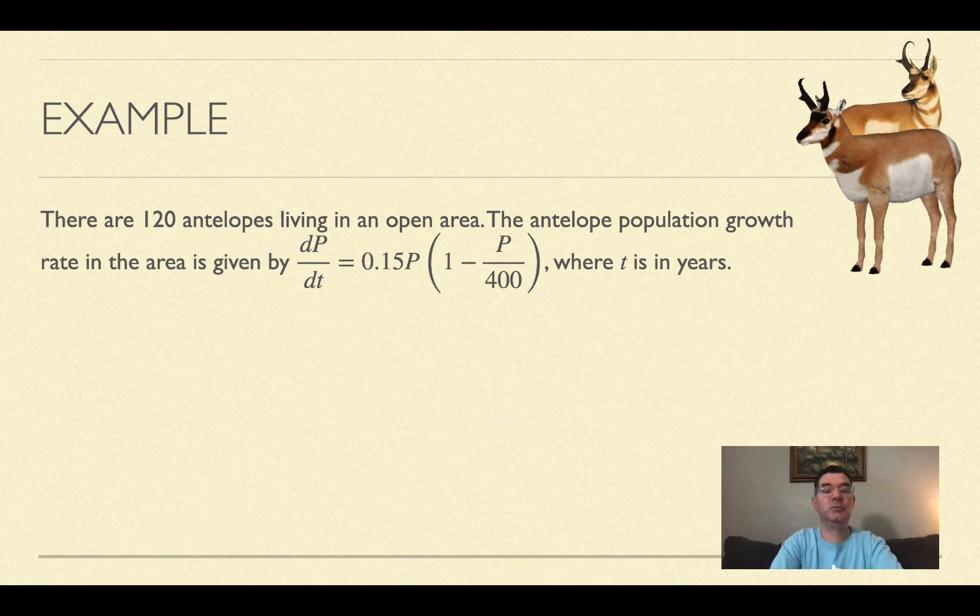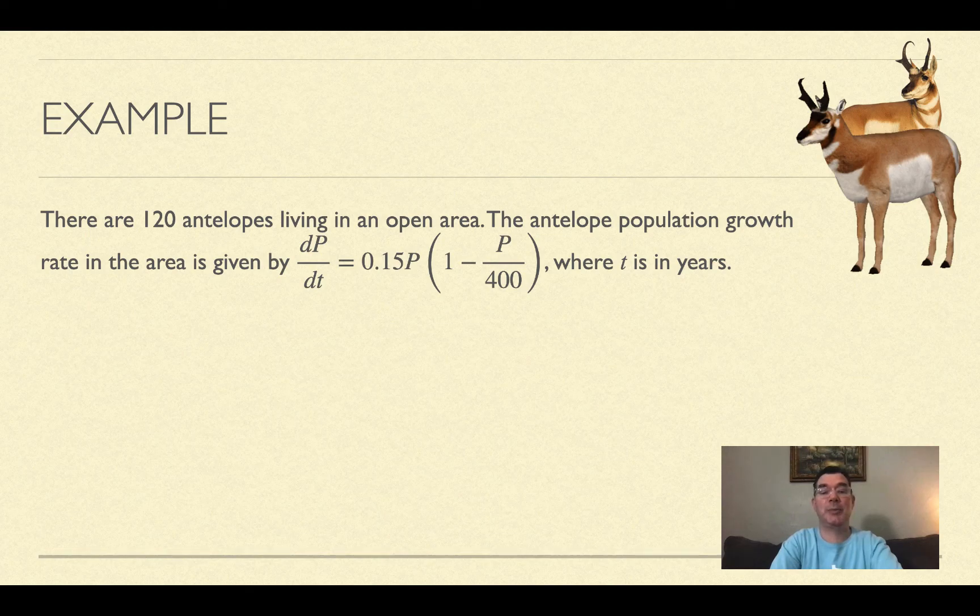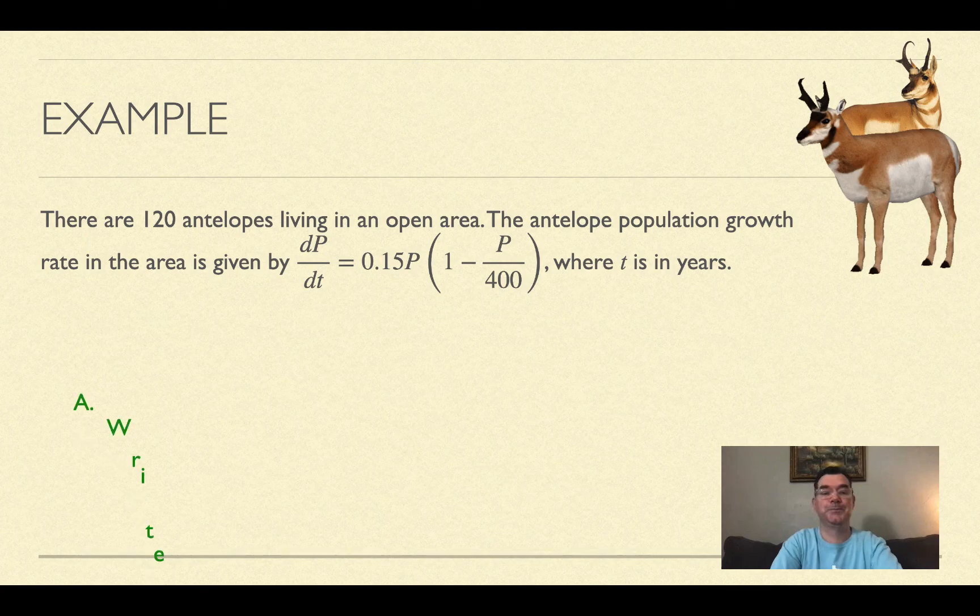Here's an example. There are 120 antelopes living in an open area. The antelope population growth rate is given by dP/dt = 0.15P(1 - P/400), where t is in years and P is the population.